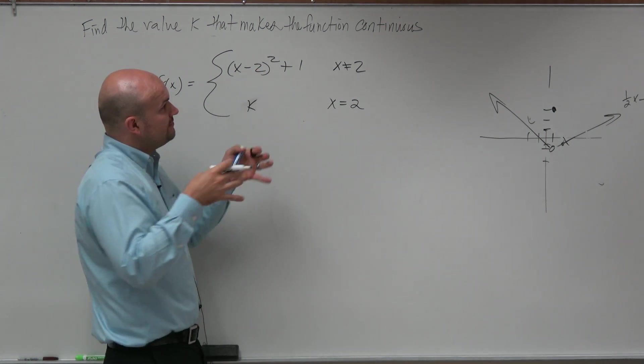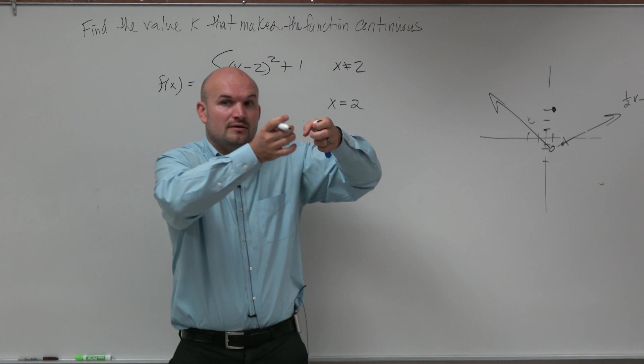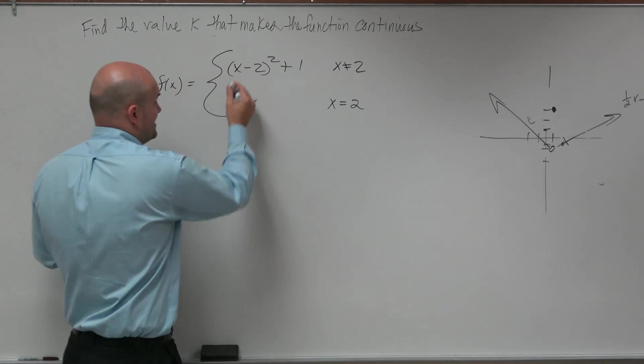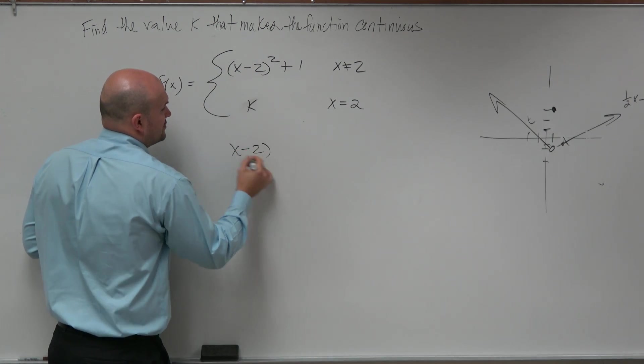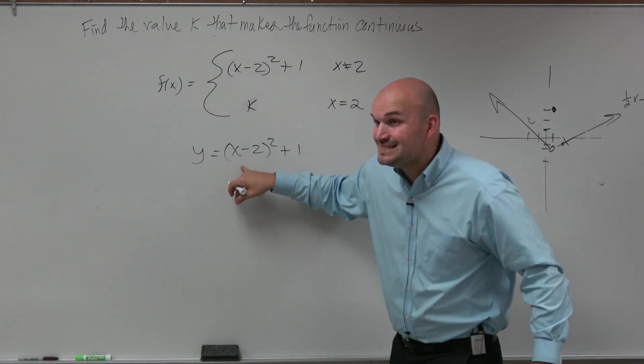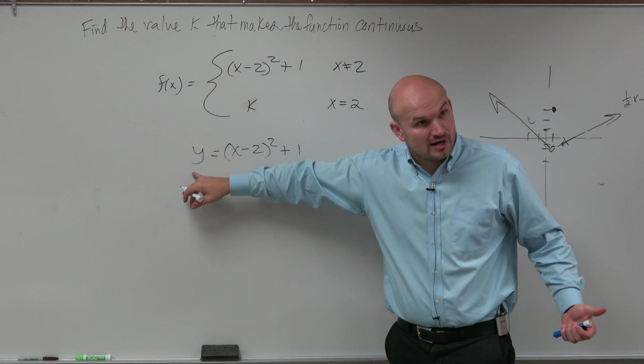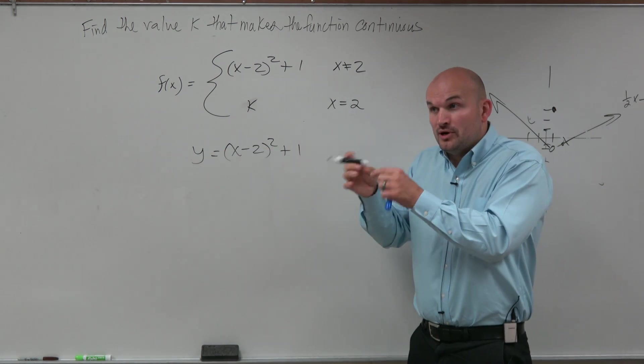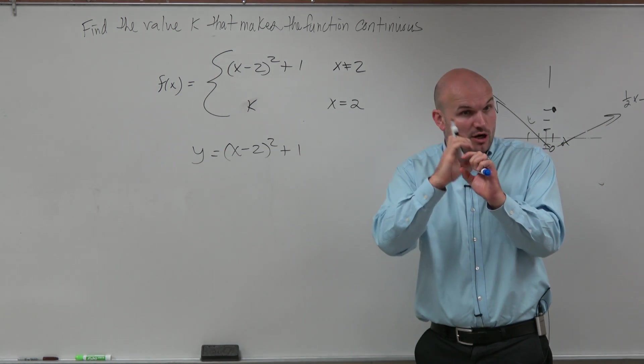We basically want our function to equal that value, right? Because when you guys take a function, x minus two squared plus one, we set that equal to y. x is the input, y is the output, right? So we want that output is going to be where that hole is. We want to know what is that output.